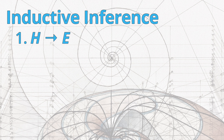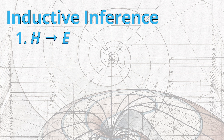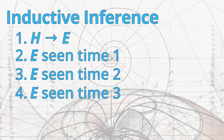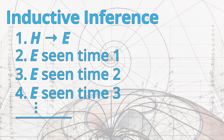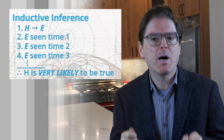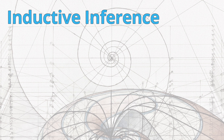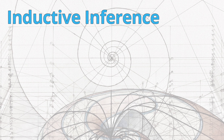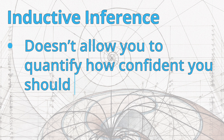Inductive inferences like this are one way that philosophers have attempted to model the relationship between expectations and evidence. We would say: if H, then E is true; we have seen E many times; therefore we can be reasonably sure that H is very likely to be true. This simple inductive model of scientific reasoning has shortcomings, though. For example, it doesn't allow you to quantify how confident you should be in the hypothesis based on the evidence you have.